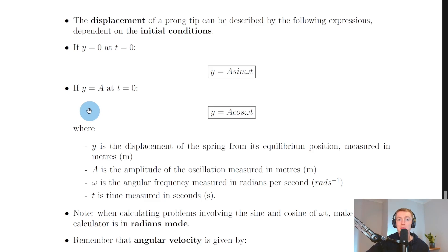Alternatively, if the object starts at its maximum displacement away from the equilibrium position, i.e. at the amplitude A of the oscillation, and if that occurs at time t equals zero, then we use this expression instead: Y equals A cos omega t.